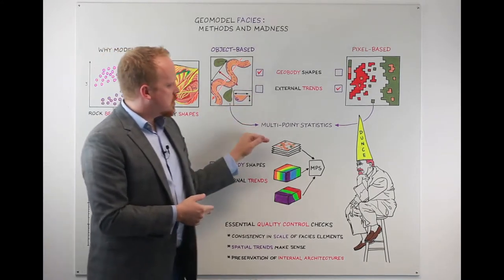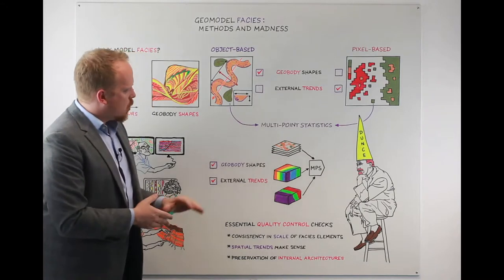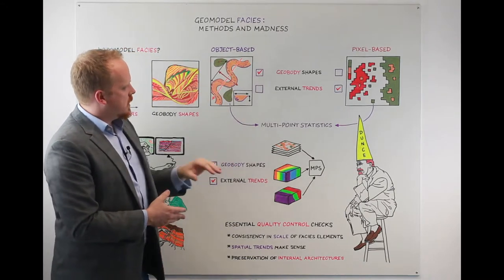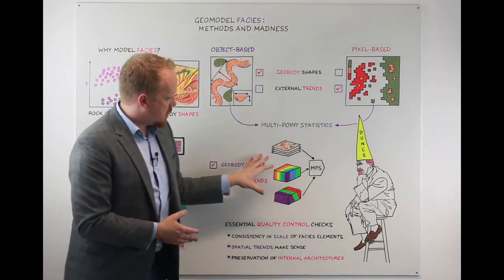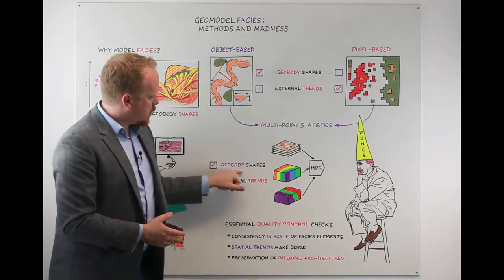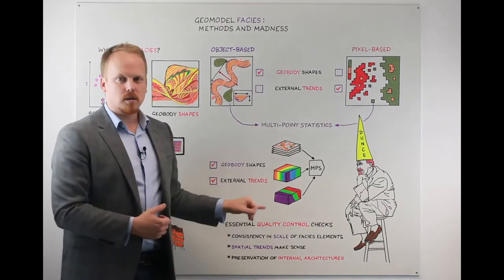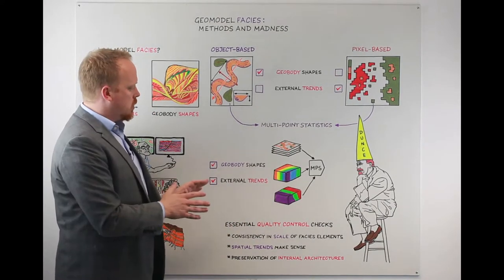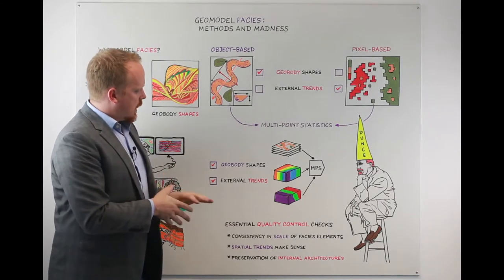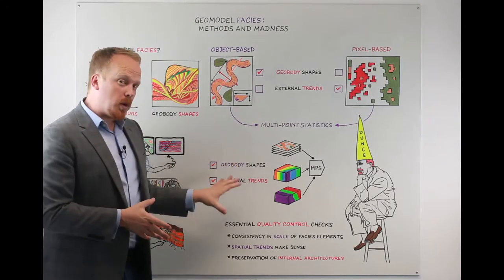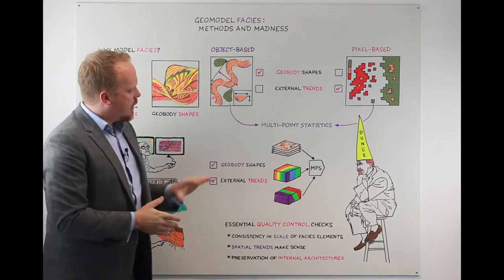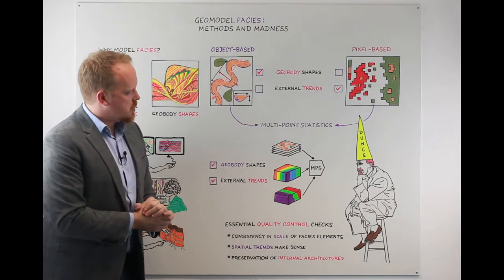But the two came together with multi-point statistics where we used an object-based model and a pixel-based methodology to try to give us both the geobody shapes and the external trends all in one kind of solution. And in many regards it's probably one of the most powerful methods that's out there in the industry today. It's preferred by a lot of the super majors.